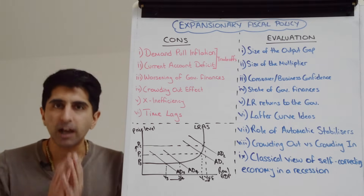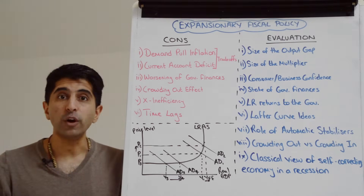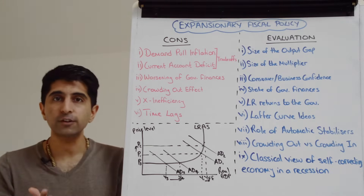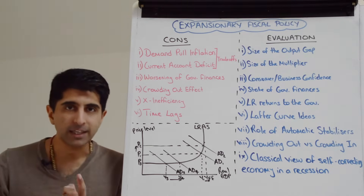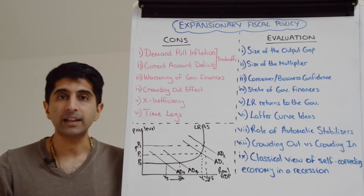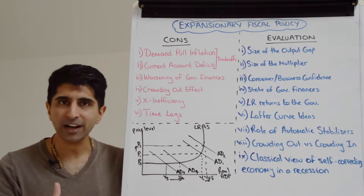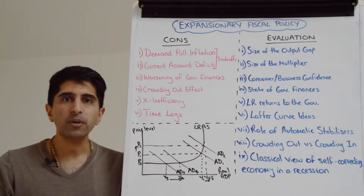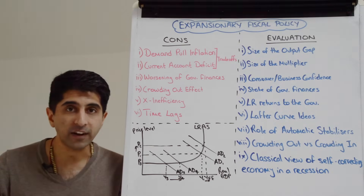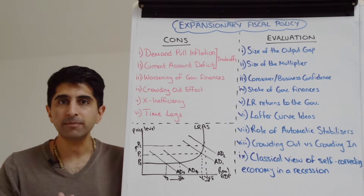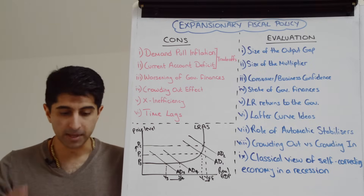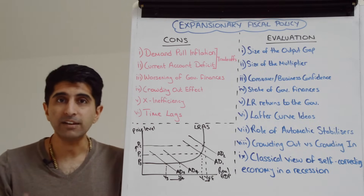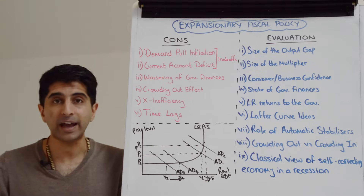Government finances are likely to worsen with expansionary fiscal policy. Budget deficits could rise — that's the amount of government borrowing in a year — and the national debt could increase as well. The question is how these policies will be funded: will it mean cuts to government spending in other areas such as health, education, infrastructure, public sector wages, or welfare?